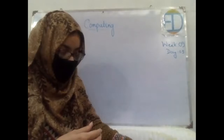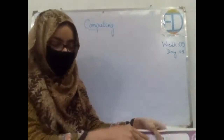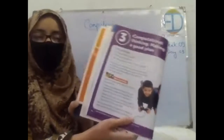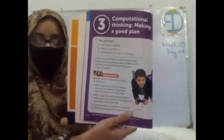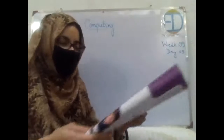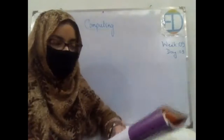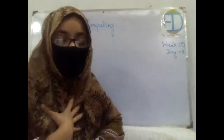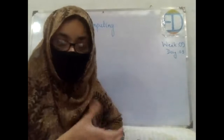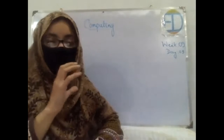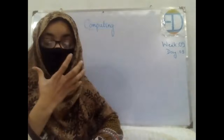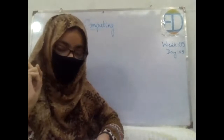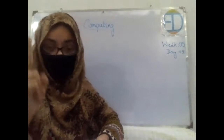I want all of you to open your book to page number 36. Look at it — it says that another name for the plan for a task is an algorithm. In the language of computers, we call this plan an algorithm. We will be discussing what algorithm means.